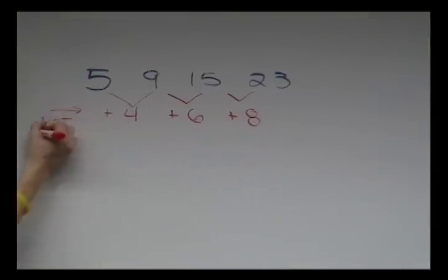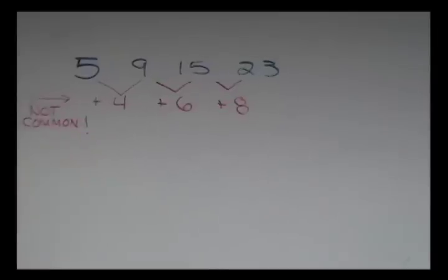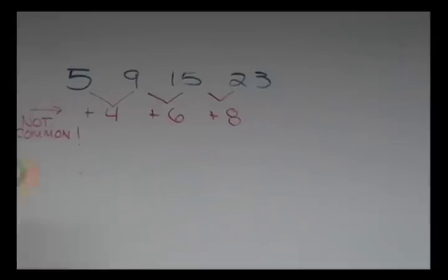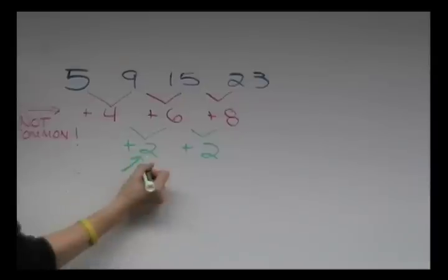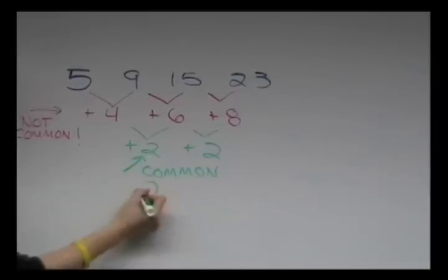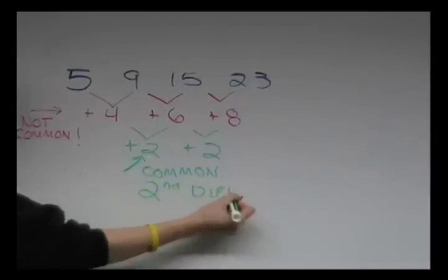But you notice the numbers are getting closer together. This tells us we should try again. When we do a second row of differences, we find that the difference between 4, 6, and 8 is 2. We call this a common second difference.